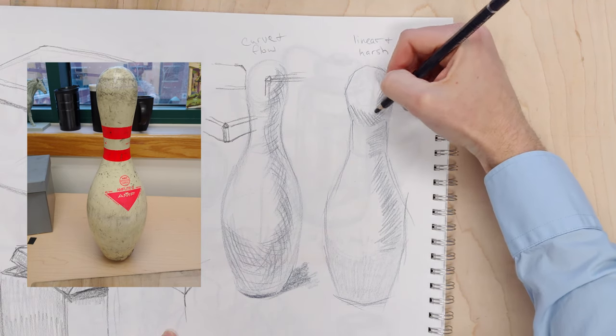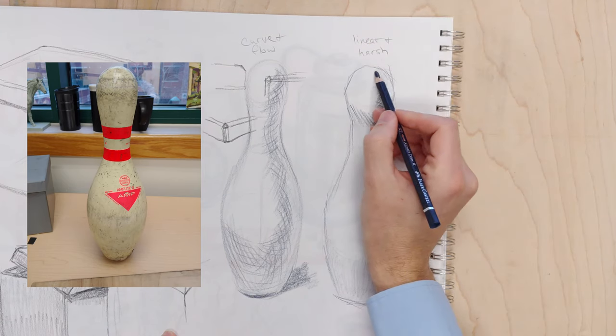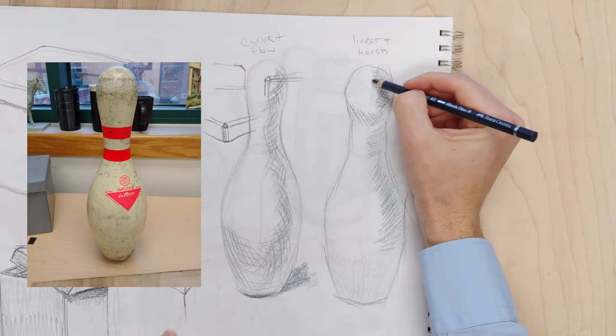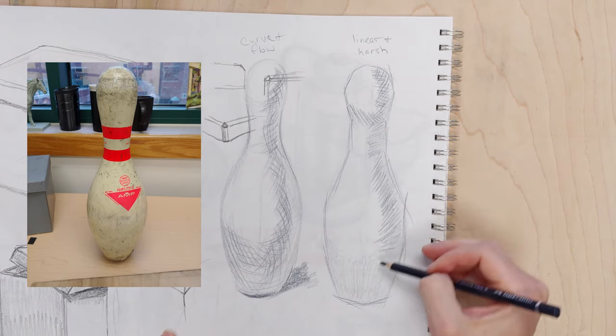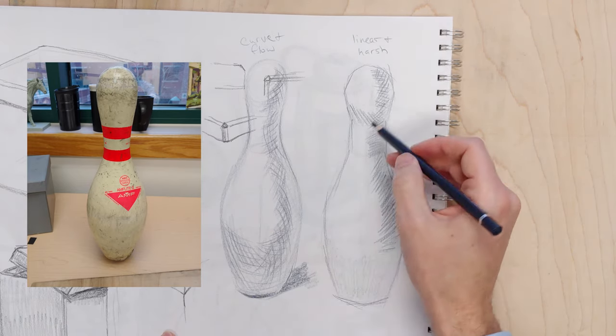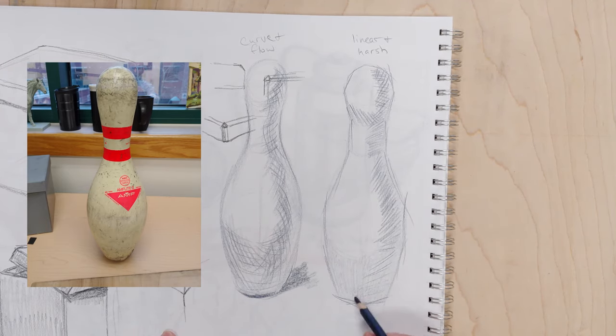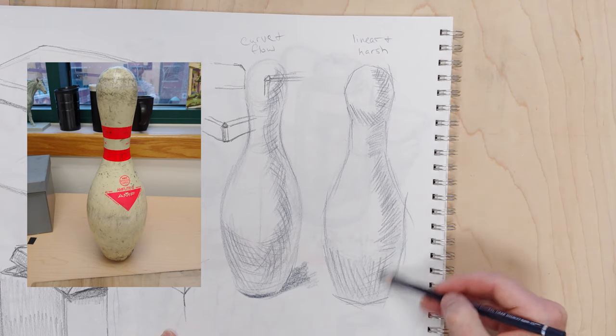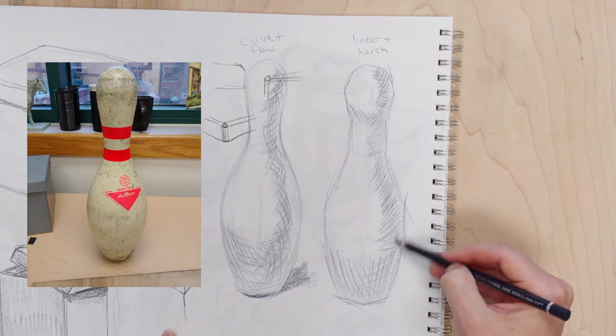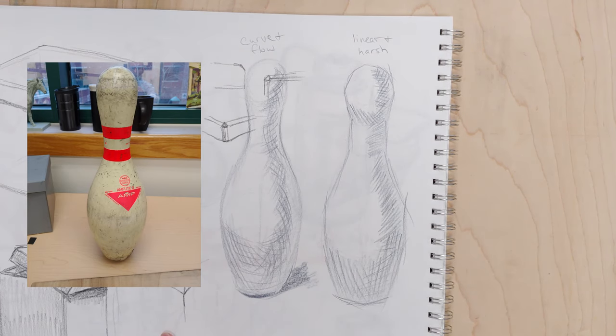And here I can go a couple directions. You know, hatching itself, where you go one direction like this, gives it a feel. Cross hatching gives it another feel. And so you can kind of experiment with how you like to do both, or any of those. And you can use both in the same image like this, as long as you're kind of obeying the value. So what I've done here is I've created the same object, drawn two different ways, using a really logical mark-making system.